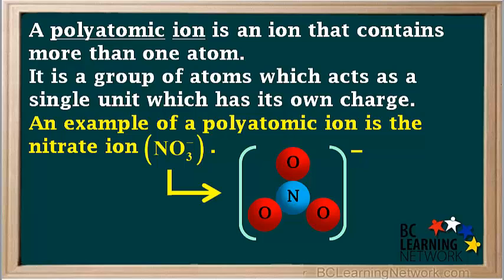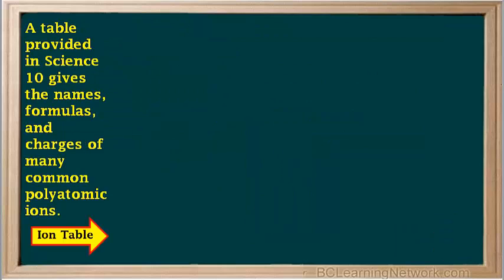Here's a simple drawing of a nitrate ion. It maintains this structure when it forms compounds. The bonds between N and O atoms do not break, so it remains as NO3-. An ion table provided in Science 10 gives the names, formulas, and charges of many common polyatomic ions.